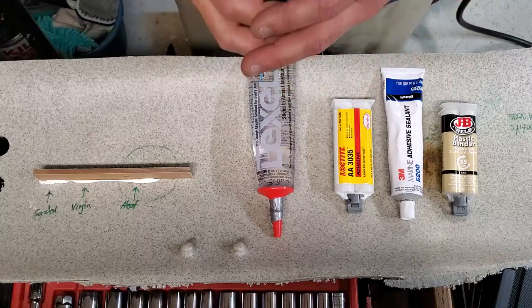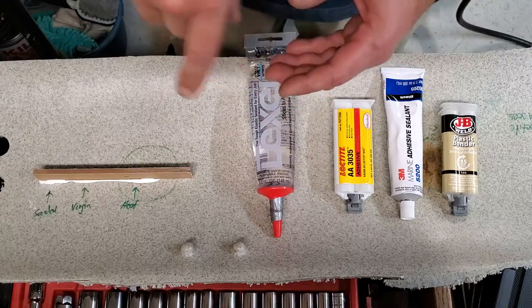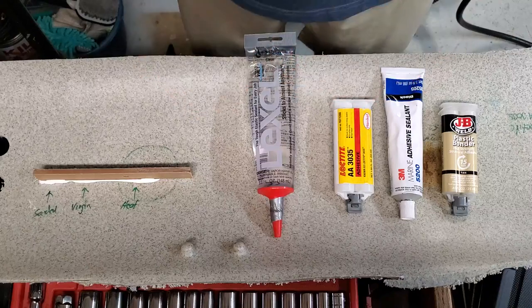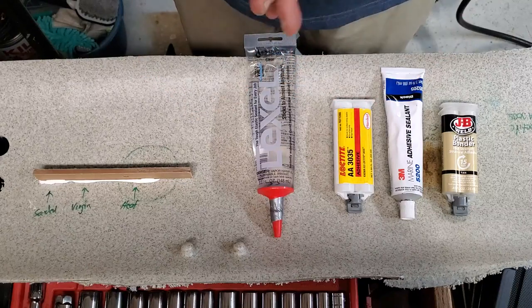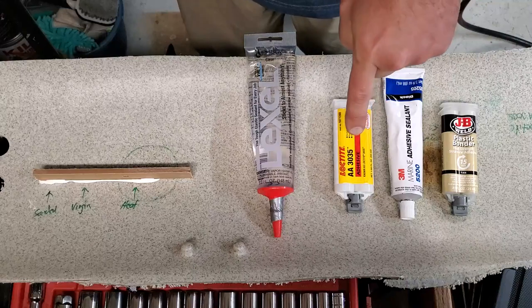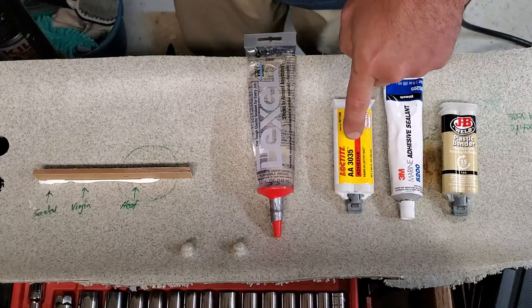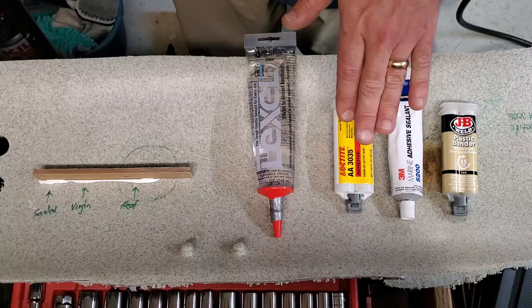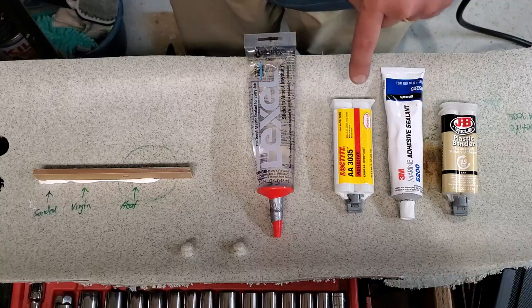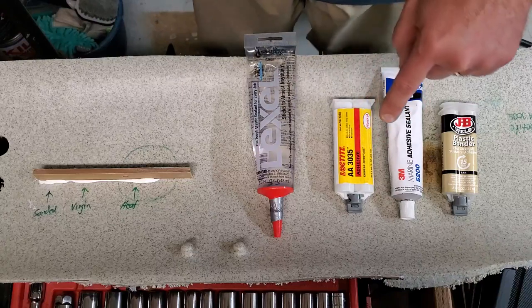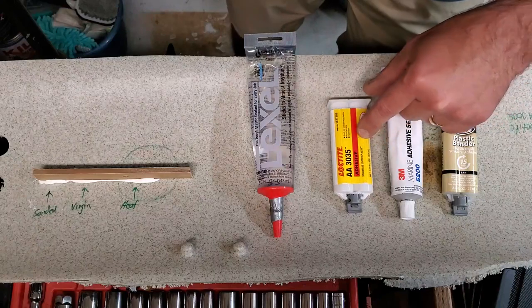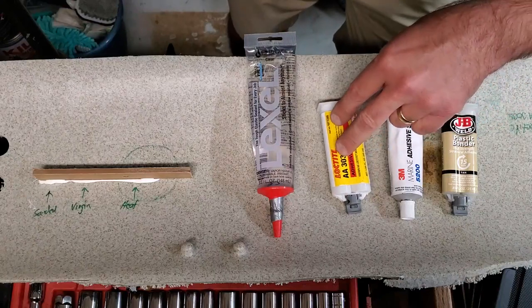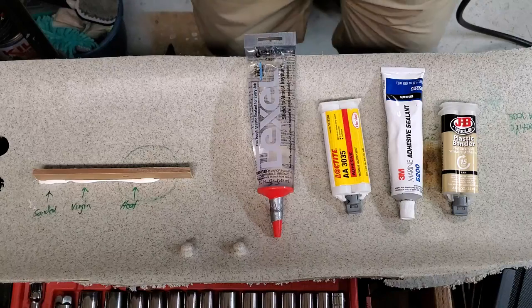The actual screw that screwed into the insert, it's a brass female threaded insert, broke loose. I had to take that out and I used epoxy to put that in. The best epoxy I found is this Loctite AA3035. It's roughly 40 to 50 dollars a tube. This is just a small regular tube, 1.69 fluid ounces.